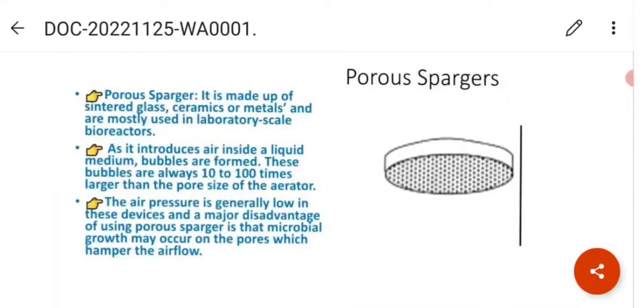We have different types of spargers. First, we have porous spargers. Porous spargers are made up of sintered glass, ceramics, or metals and are mostly found in laboratory scale bioreactors. As it introduces air inside a liquid medium, bubbles are formed. These bubbles are always 10 to 100 times larger than the pore size of the aerator. The air pressure is generally low in these devices and a major disadvantage of using porous sparger is that microbial growth may occur on the pores, which hamper the air flow.